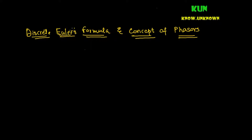To understand Euler's formula, we'll first build the case by introducing the concept of phasors and vectors. We'll decompose vectors into their projections, look into Euler's formula, derive how it relates to the vector concept, and then decompose theta into omega and t to visualize it geometrically.